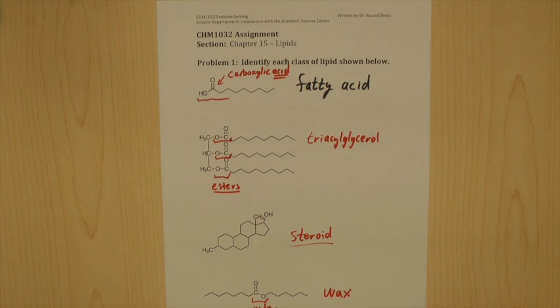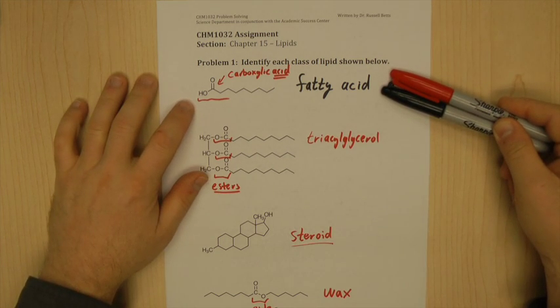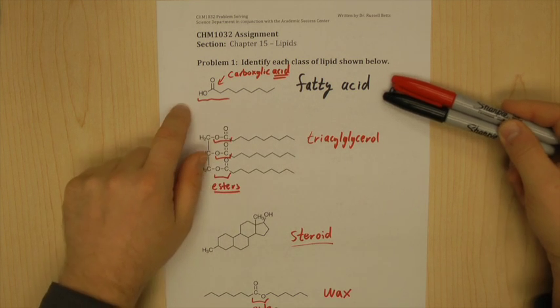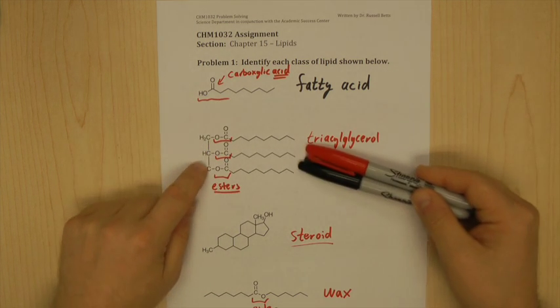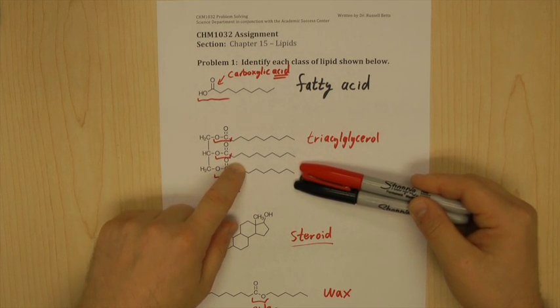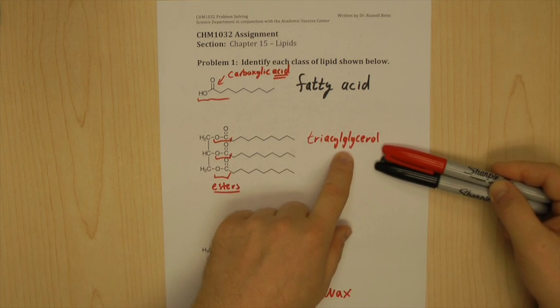So let's go over them one more time from the top. This is a fatty acid. You have a carboxylic acid and a long chain of hydrocarbons. That's a fatty acid. Here we have three esters and three hydrocarbon chains. This is a triacylglycerol.